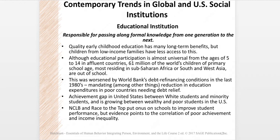The educational institution is responsible for passing along formal knowledge from one generation to the next, and also for passing along the culture of that society — from learning the Pledge of Allegiance on up. Early childhood education has become increasingly important; its quality has benefits that last throughout a lifetime, but children from low-income families have less access to it. Although educational participation is almost universal for ages five to fourteen in wealthier countries, there are 61 million school-age children in the world who don't attend school — largely in sub-Saharan Africa and South and West Asia.